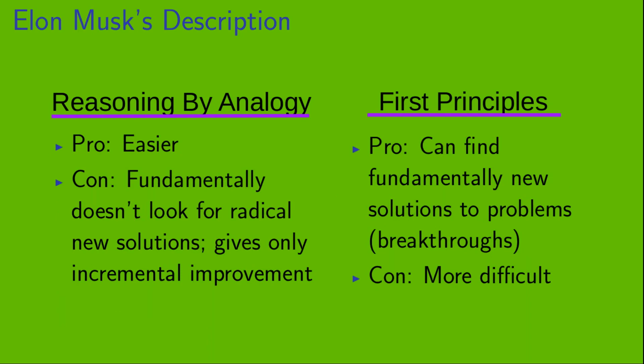Now, each of these methods has some pros and some cons. So, let's look at those. First, reasoning by analogy. This has the advantage that it is easier. But, on the other hand, it also fundamentally doesn't look for radical new solutions to problems. So, it gives only incremental improvement. On the other hand, the first principles method can find fundamentally new solutions to problems. So, it can create breakthroughs. But, on the other hand, it's more difficult.